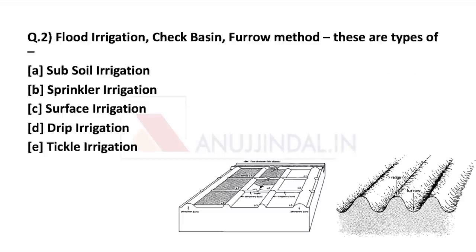The next question is: flood irrigation, check basin, and furrow method — these are types of what? There are different types of irrigation methods like the sprinkler method, surface method, drip irrigation, trickle irrigation — drip and trickle are the same — and subsoil irrigation. These are different methods, but there are subcategories as well. Flood irrigation, check basin, and furrow method all come under surface irrigation.